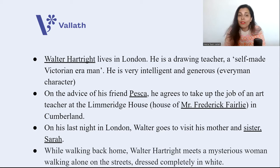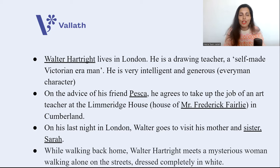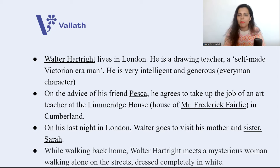Walter Hartwright, on the advice of his friend Professor Pesca, agrees to take up the job of an art teacher at Limeridge House in Cumberland. He is a little hesitant to go to Cumberland for his job, but he needs money. On his last night in London, he goes to visit his mother and his sister Sarah. While walking back home, Walter Hartwright meets a mysterious woman walking alone on the streets, dressed completely in white.